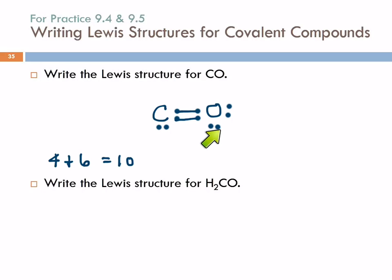So I'm going to take another lone pair and share it. I'll put that between these guys. Now carbon has two, four, six, eight. Oxygen has two, four, six, eight. We have octets for each and the correct number of electrons. So we have our Lewis structure.